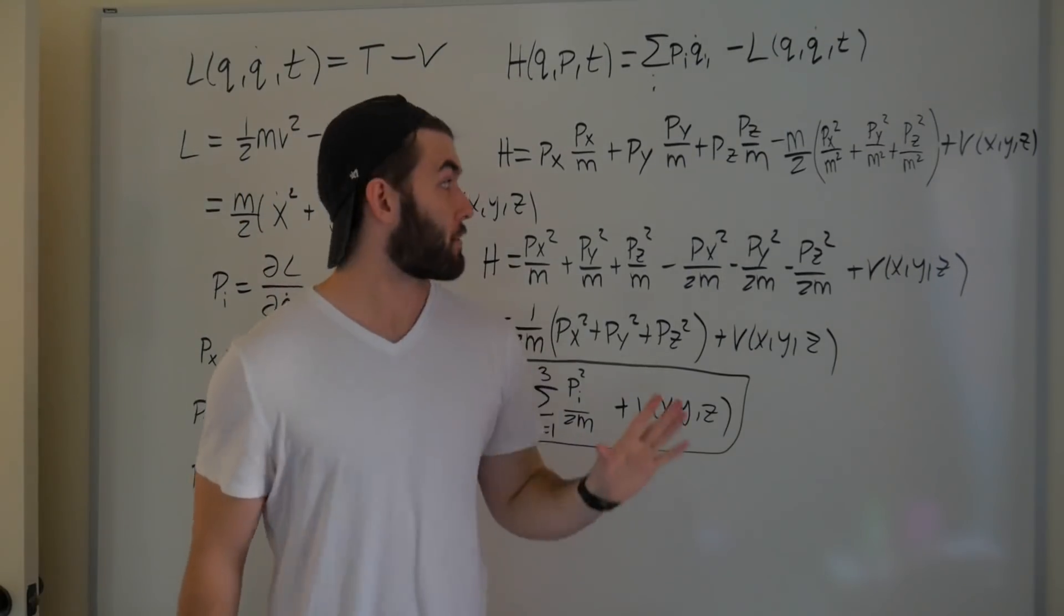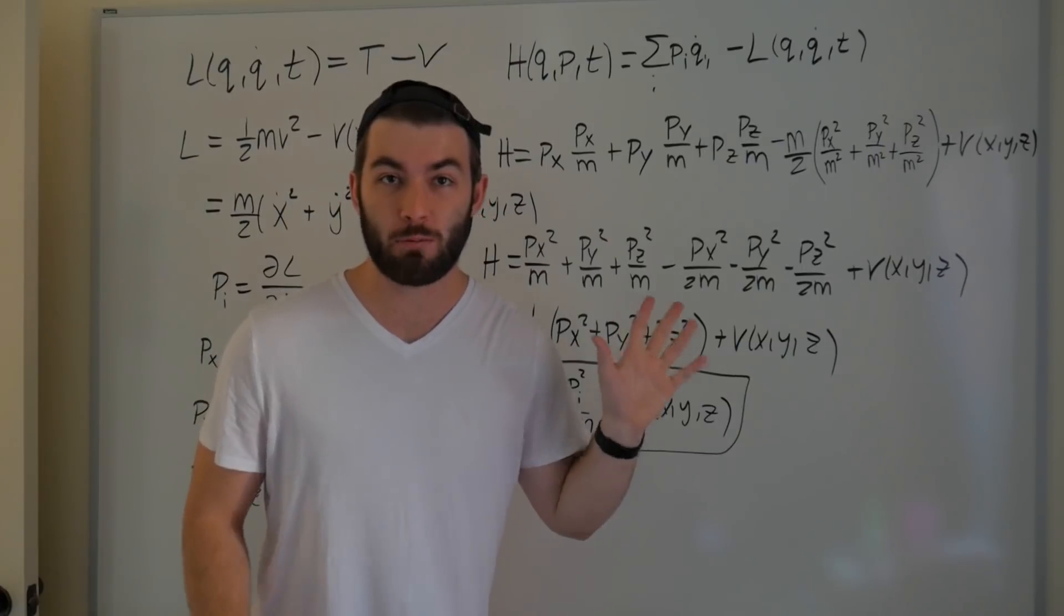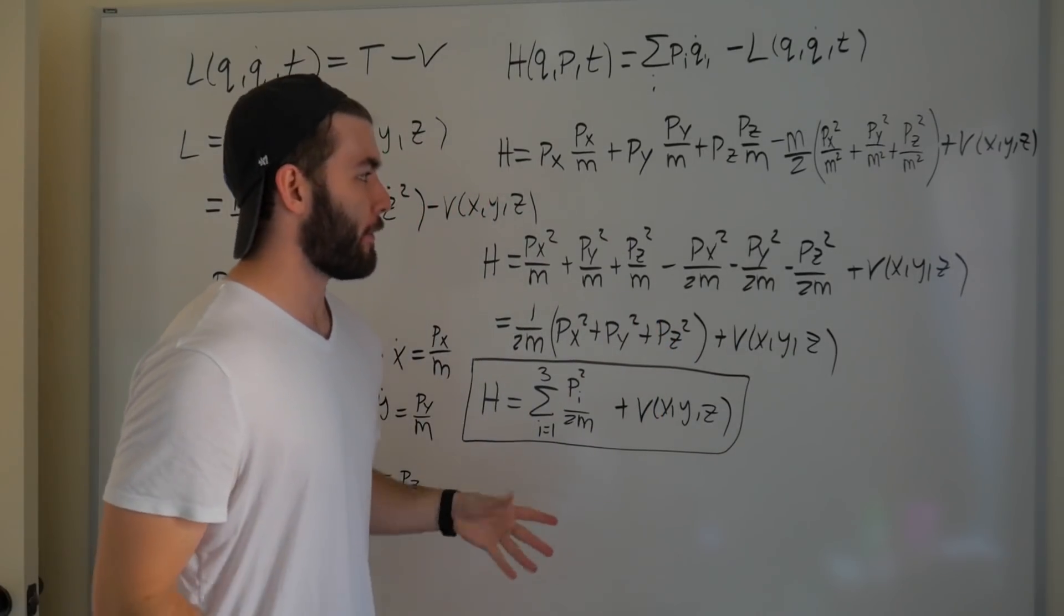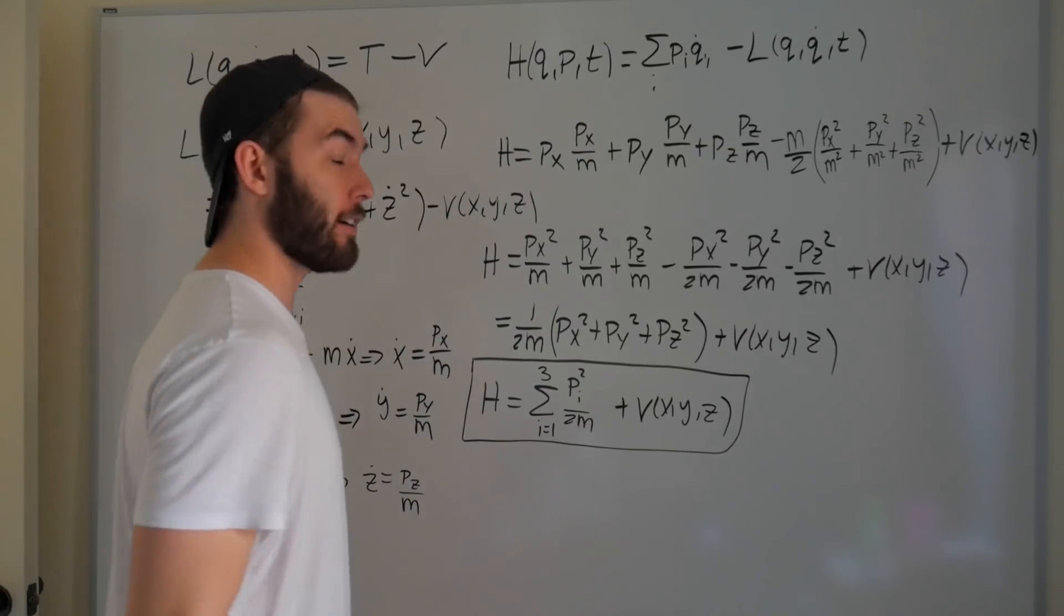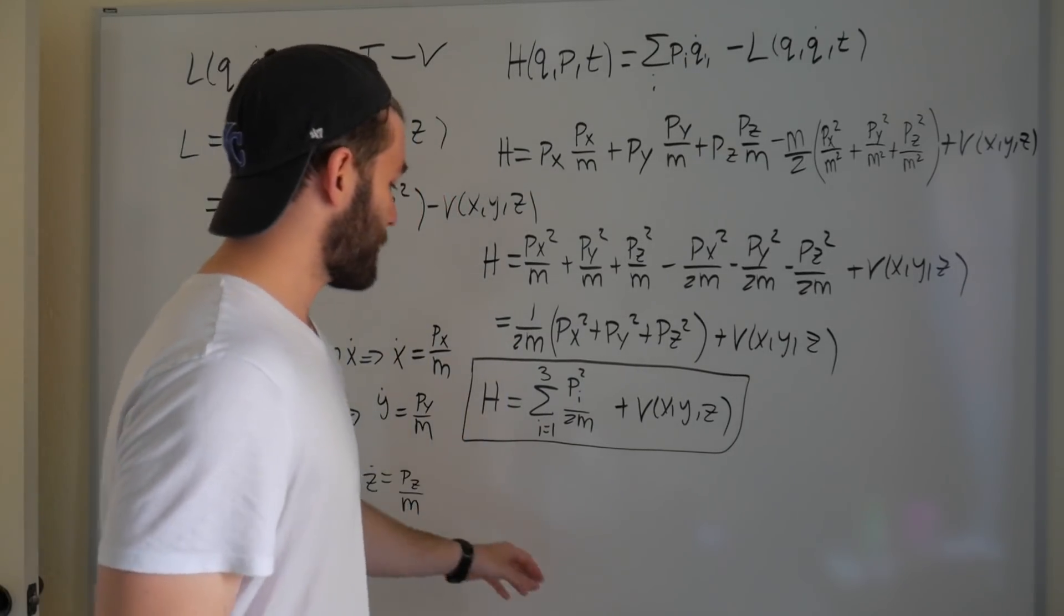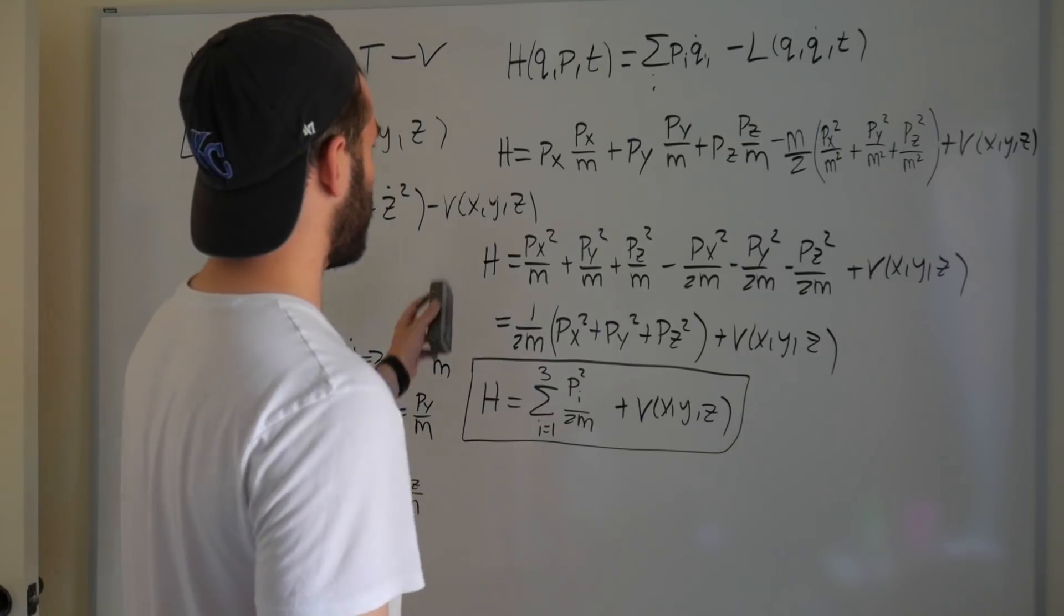And there we have our Hamiltonian converted from our Lagrangian. Hell yeah. Now, I don't think this blew anyone's mind. This was supposed to be a relatively easy video for people to understand. It's converting something with well-established rules into something else with equally well-established rules.